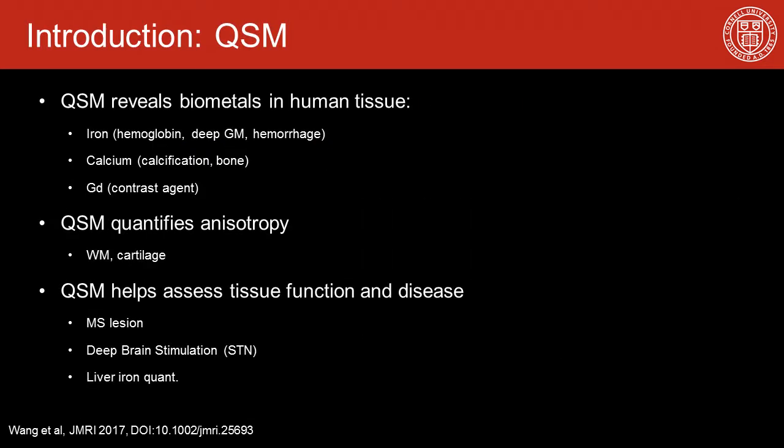QSM can reveal the biometal distribution in human tissue, such as the iron in hemoglobin, deep gray matter and hemorrhage, calcium in calcification and bone mineralization, or gadolinium in some contrast agents.